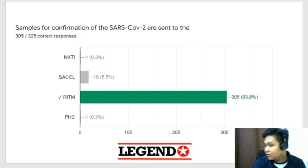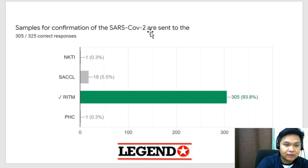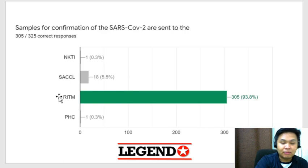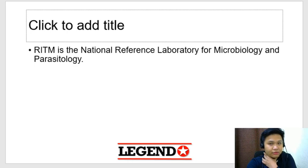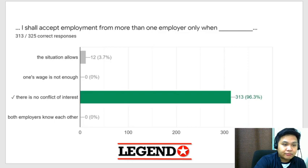Samples for confirmation of SARS-CoV-2 are sent to the RITM (Research Institute for Tropical Medicine), which is the National Reference Laboratory for microbiology and parasitology. Although regional laboratories like Baguio General Hospital now also test for COVID-19, RITM remains the reference lab.